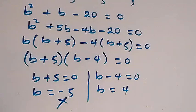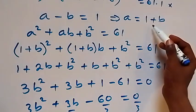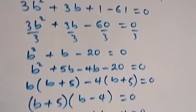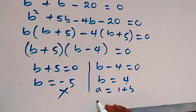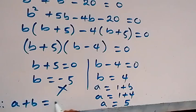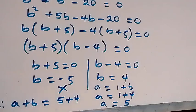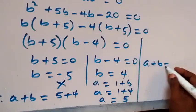So we take b = 4. From the relation a = 1 + b, it implies that a = 1 + 4 = 5. Therefore, the value of a plus b that we are finding is 5 + 4, which equals 9. So therefore a plus b equals 9, and that's the solution to the problem.